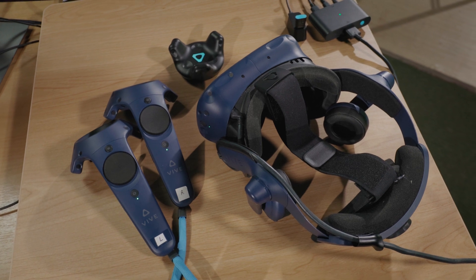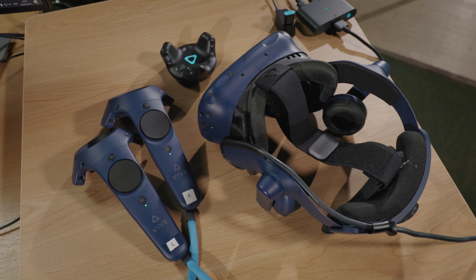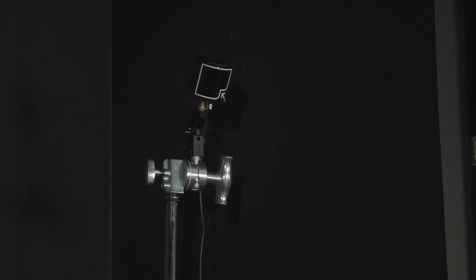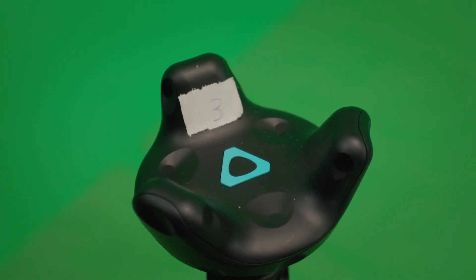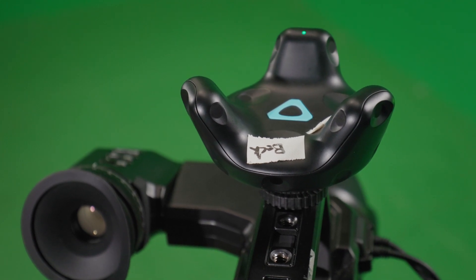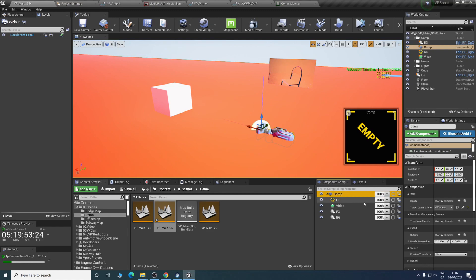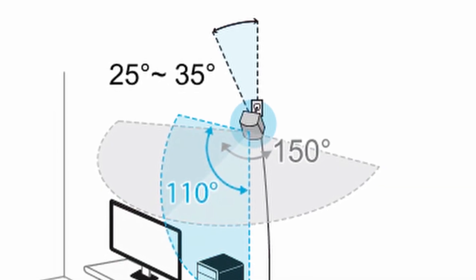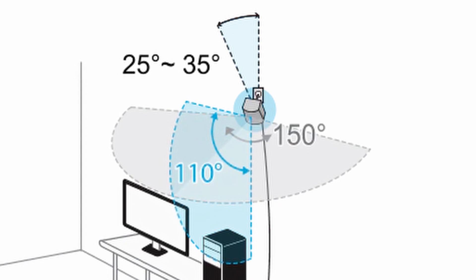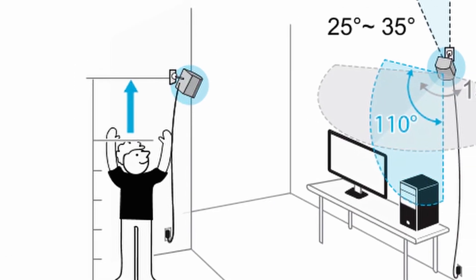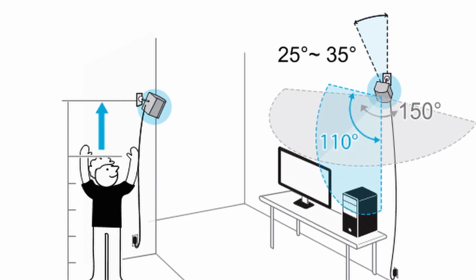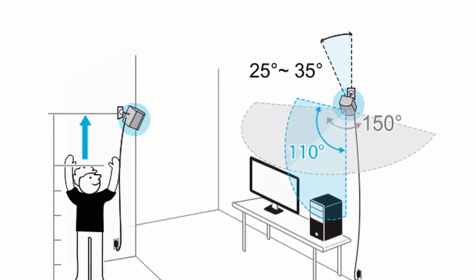The HTC Vive Pro headset comes with two base stations, one headset, and two hand controllers. We have expanded out from this by having four base stations in total, which allows for more accurate tracking over a wider area. We also have several Vive 2.0 trackers — it is these trackers and the base stations that allow us to create a virtual camera that is linked to a real-world camera. According to Vive's official tips for setting up SteamVR Base Stations 2.0, each base station has a 150-degree horizontal field of view and 110-degree vertical field of view. Ideally, you want the base stations to be higher up so nothing blocks them from seeing one another, facing 25 degrees down to the floor. Four base stations can cover an area of up to 10 meters by 10 meters and add additional accuracy.